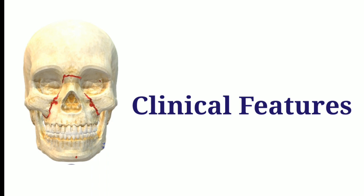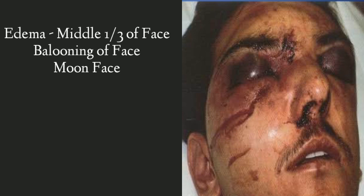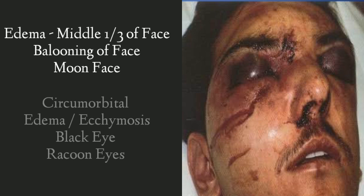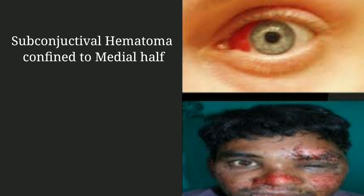Because the fracture involves the middle third of the face, there will be gross edema of the middle third of the face. On examination of the eyes, there will be edema and ecchymosis present circumorbitally — this circumorbital edema and ecchymosis gives the appearance of black eyes, sometimes referred to as raccoon eyes.